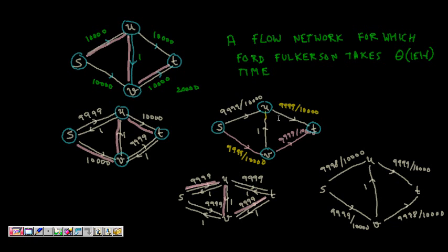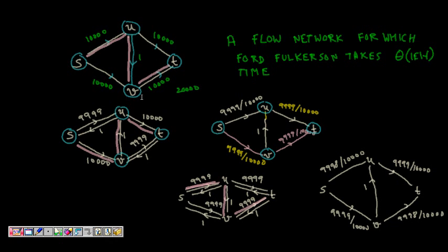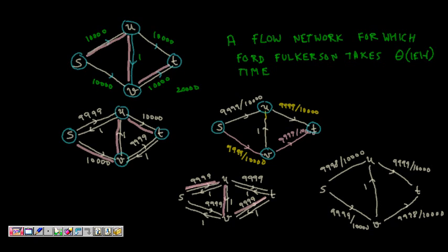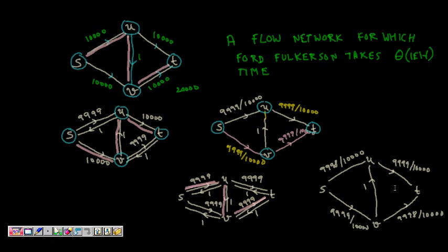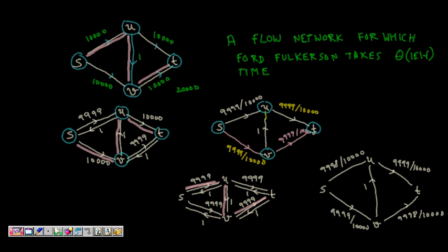So every time it is decreasing by 1. Again if we take this same path alternately, so again we will get a 1 increment here. So it will be 9998, 9998 it will become and now we will again go to this path.